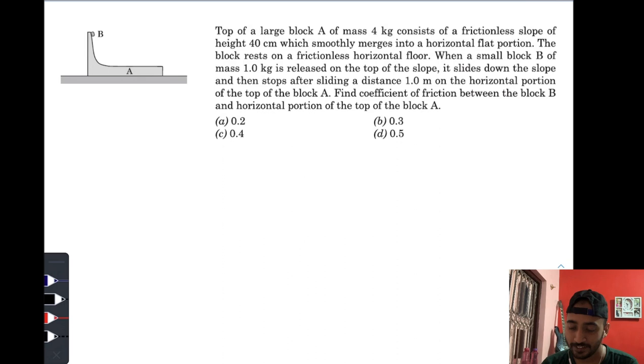In today's video, we have: Top of a large block A of mass 4 kg consists of a frictionless slope of height 40 centimeters. When a small block B of mass 1 kg is released on the top of the slope, it slides down the slope.